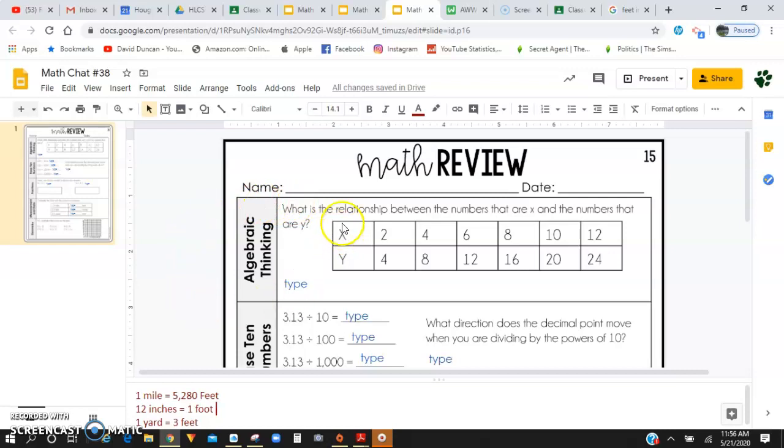For algebraic thinking, it's asking you what the relationship is between the numbers on X and Y. So you're going to look at the X row and the Y row.